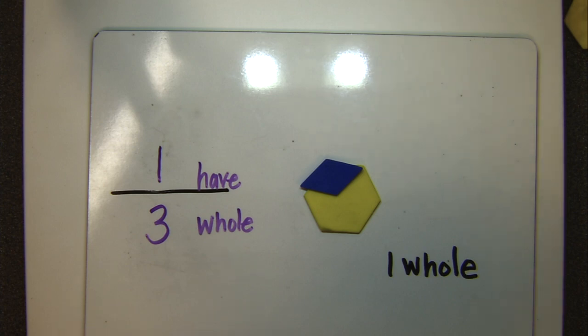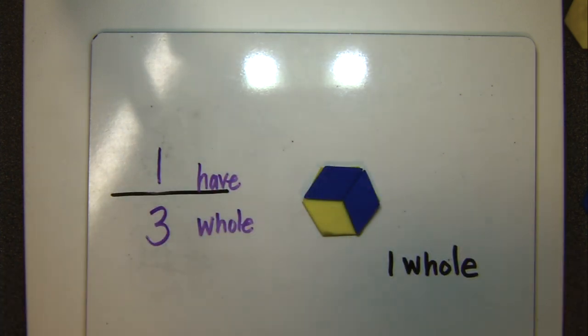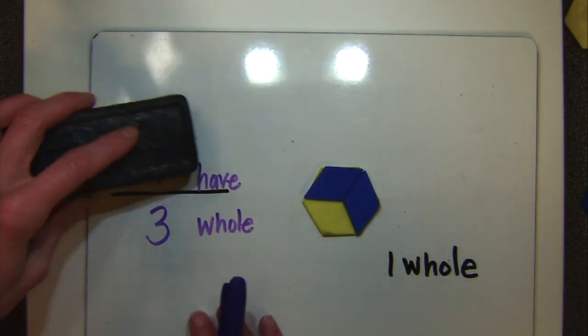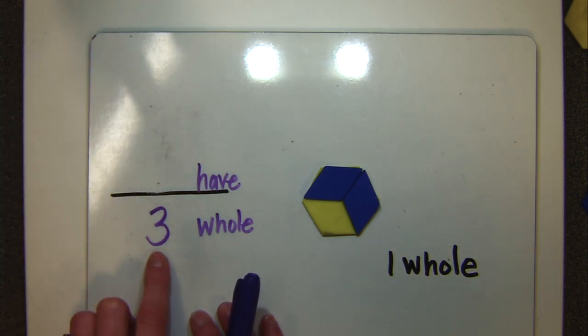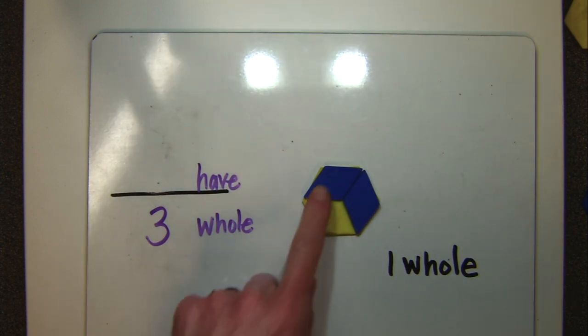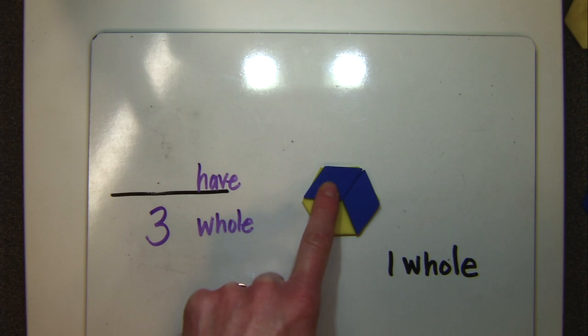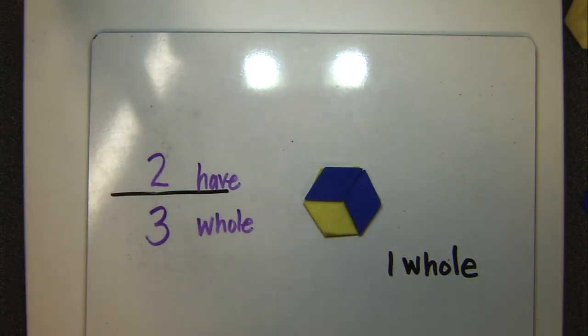This blue parallelogram represents one third of our whole. Now I'm going to add one more so you can get the hang of this, because once you know what your whole is, it's really easy to create new fractions. We're still using blue parallelograms. How many do we have in the model right now? I see one third... I see two thirds. So our fraction here is two thirds. When we have two of them, we would have two thirds.